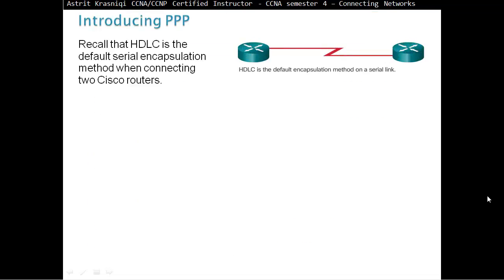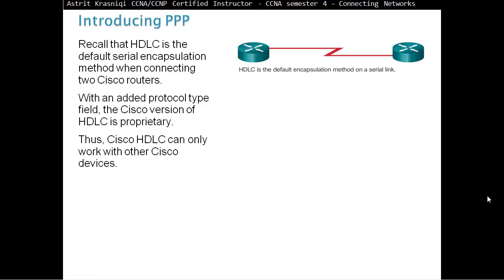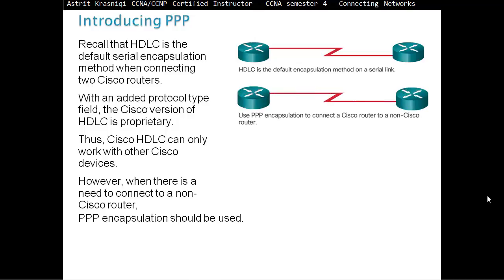Introducing Point-to-Point Protocol. You should recall that HDLC is the default serial encapsulation method when connecting two Cisco routers. With an added protocol type field, the Cisco version of HDLC is proprietary. Thus, Cisco HDLC can only work with other Cisco devices. However, when there is a need to connect to a non-Cisco router,